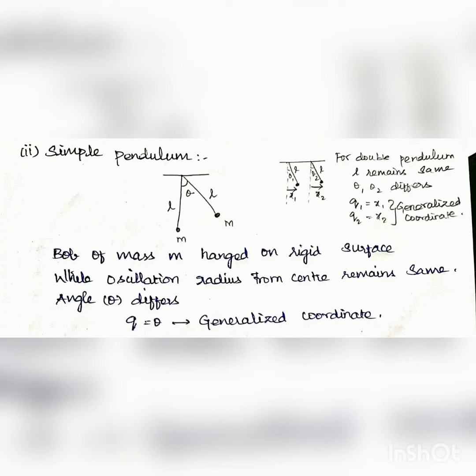Similarly, for double pendulum, two bobs of same masses are suspended at the same length on a rigid surface. The length of the string will never be changed because of the oscillation. Only the angle from the normal position of the two pendulums changes respectively.